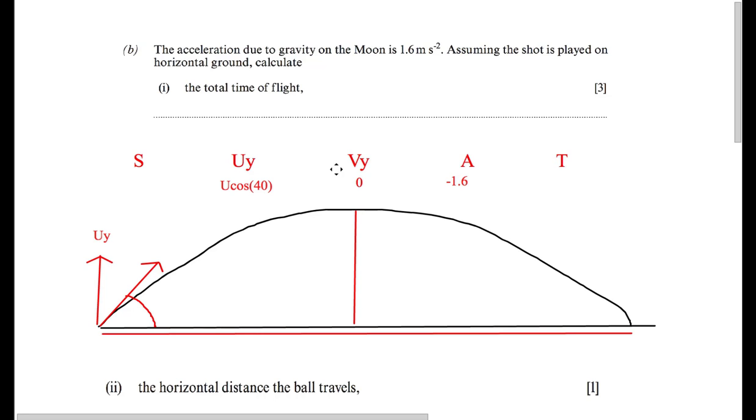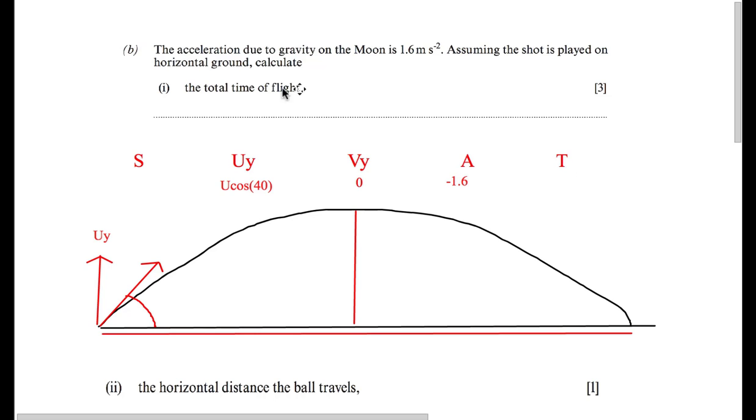Vertical initial velocity, vertical final velocity, acceleration, and time. This equation is V equals U plus AT. So inputting some of our quantities that we know, we know that V equals 0. So it would be 0 equals U cos 40 minus 1.6T. Not forgetting the negative here. This simplifies to 0 equals 10.3 minus 1.6T. Then this rearranges to T equals 6.4 seconds.